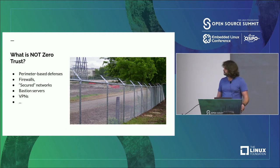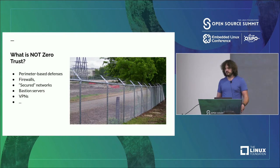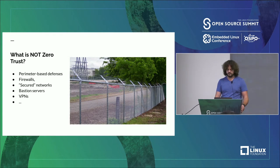Secured networks, bastion servers, VPNs — all of these are the network security angle representing NOT zero trust. It's obvious: as soon as you find one hole in one of these barriers and get in, you have full privileges and can pivot around and attack everything behind that infrastructure. This is why these older techniques don't work.